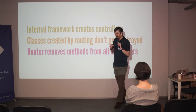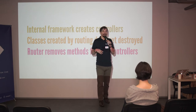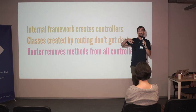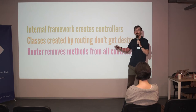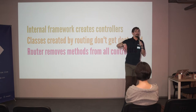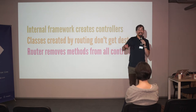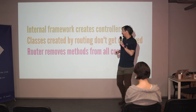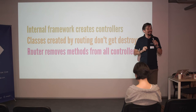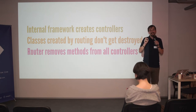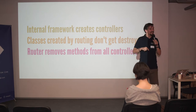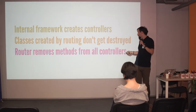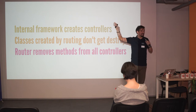Those controllers were not garbage collected — Rails isn't really respectful of your memory in this regard. They sat there, and every time Rails read the routes file, it generated a new batch of controllers, included the two helpers into them, and then for those 200 controllers from the last run, it would remove the methods and re-add them. So on every code reload, Rails had more and more code to remove and more controllers to add to — what I think the proper word for is a 'clusterfuck.' Those tiny few foul-ups add up and suddenly everything breaks. Internal framework creates controllers, classes created by routing don't get destroyed, and the router removes methods from all controllers — bam bam bam — exponential growth in time as you run your tests.